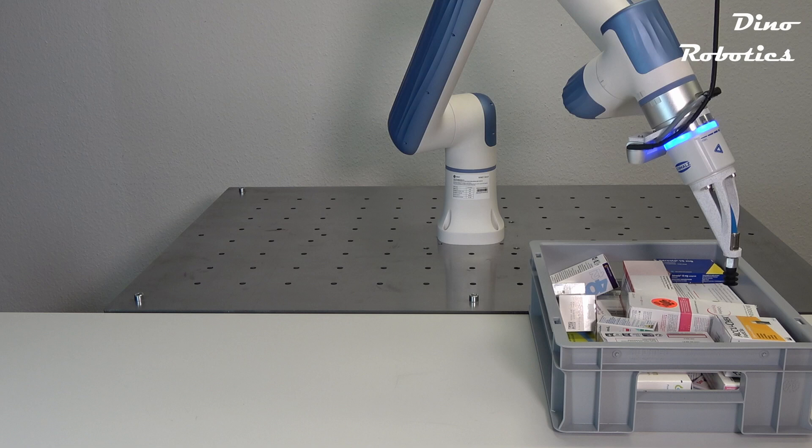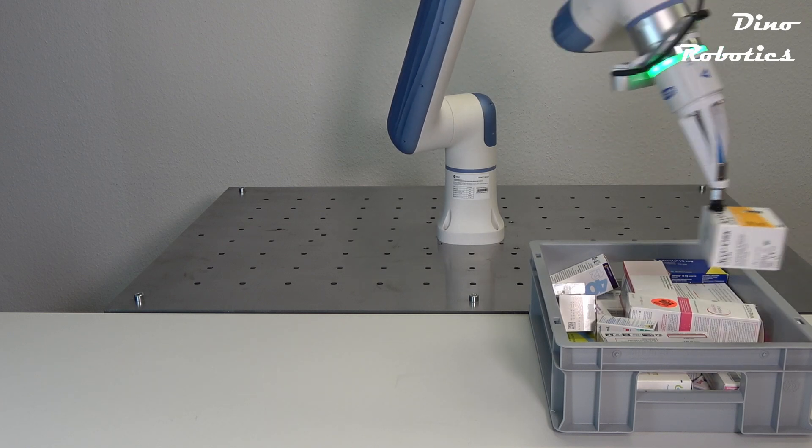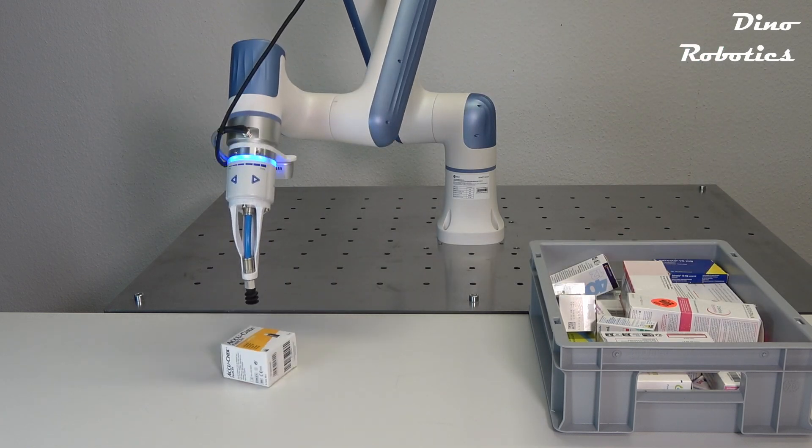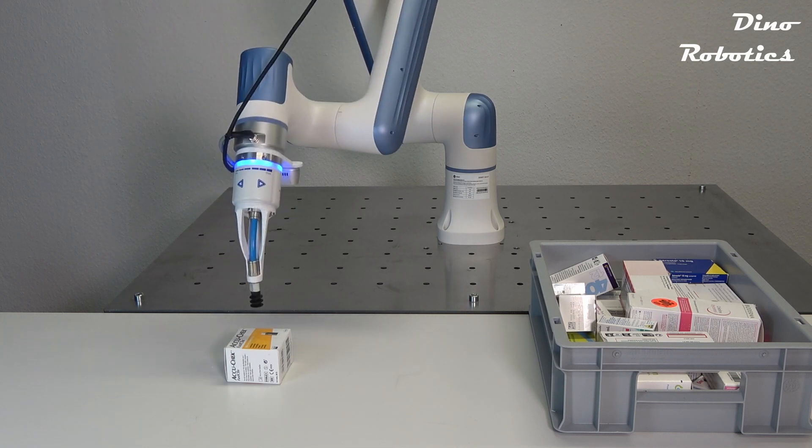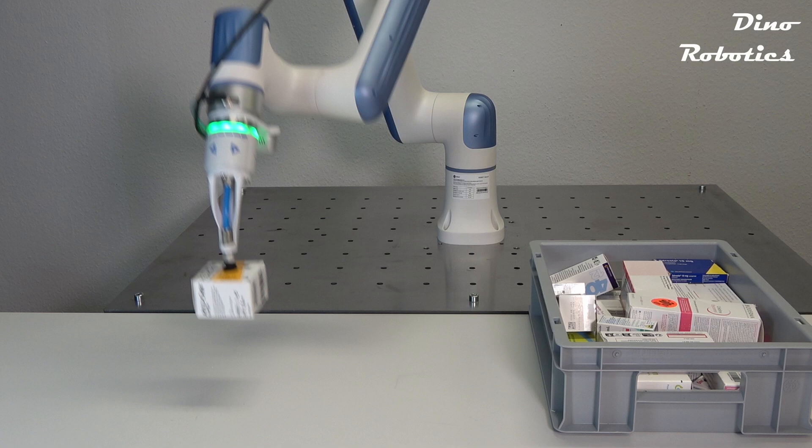Perfect for automated tasks like bin picking with a single suction cup, it easily integrates into automated machines in confined spaces. The electrical operation eliminates the need for compressed air hoses, simplifying the setup.